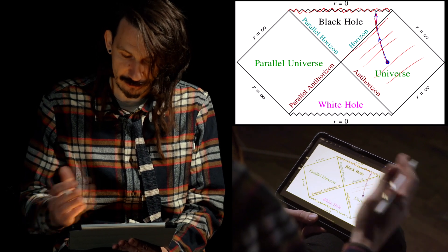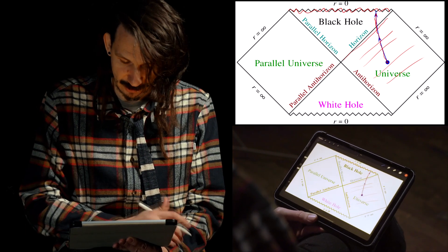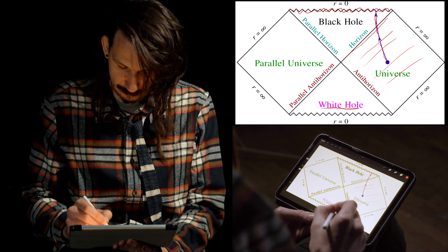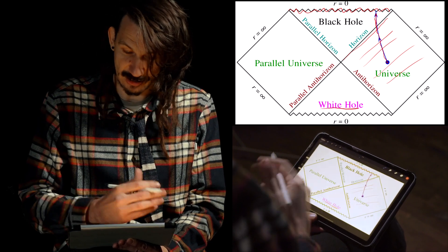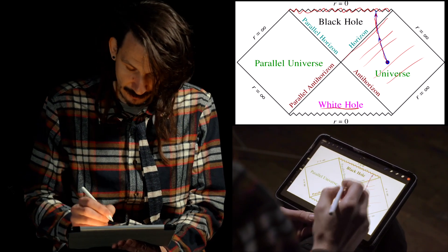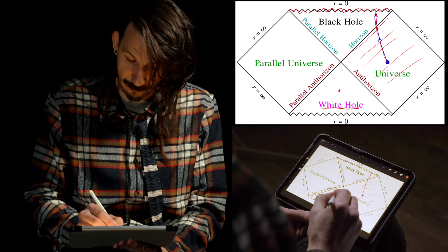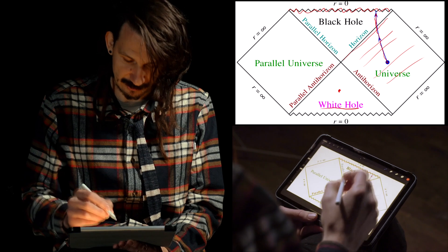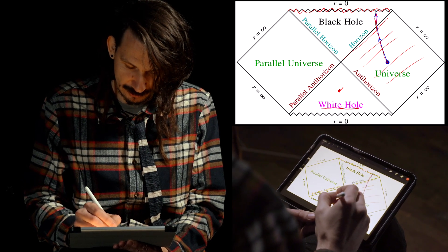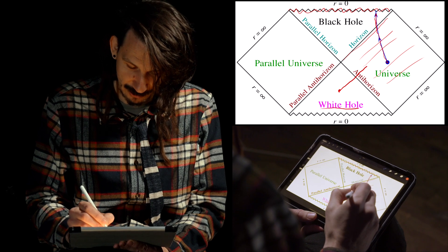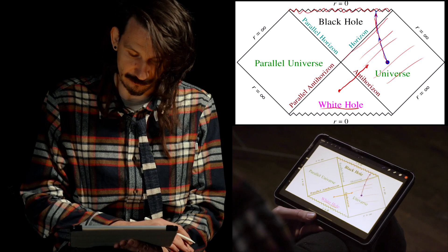Now, there are other regions in this diagram. For instance, this region here, which is called the white hole because it's the actual reverse of what we would say a black hole is, in the sense that if I would have a person or a beam of light traveling this way, it would cross the anti-horizon and reach our universe.